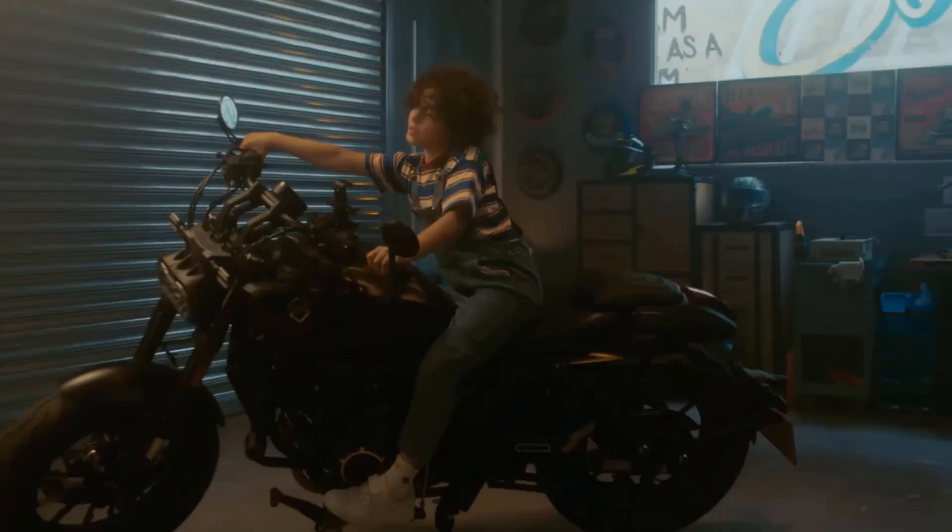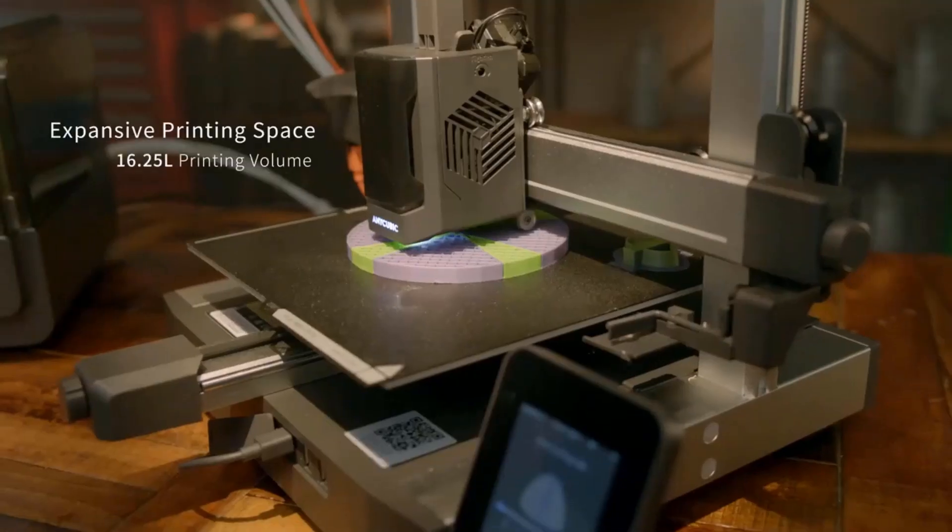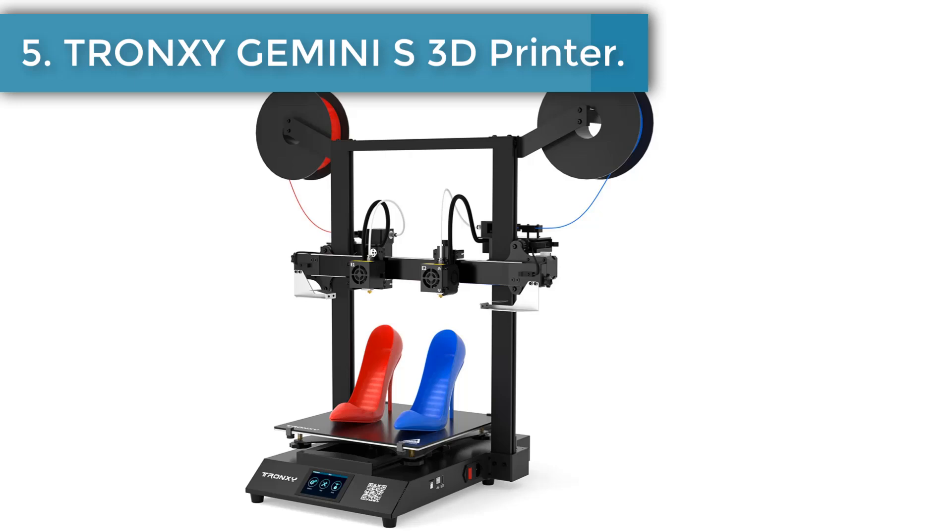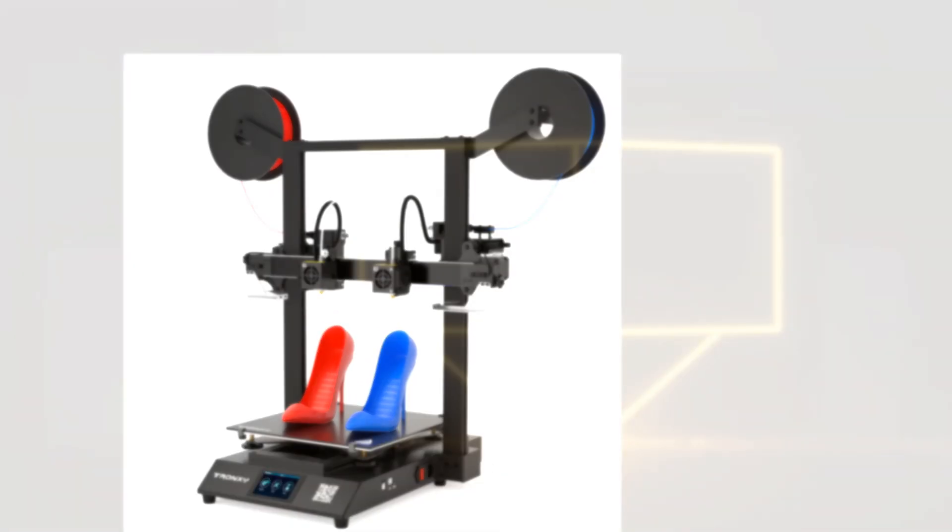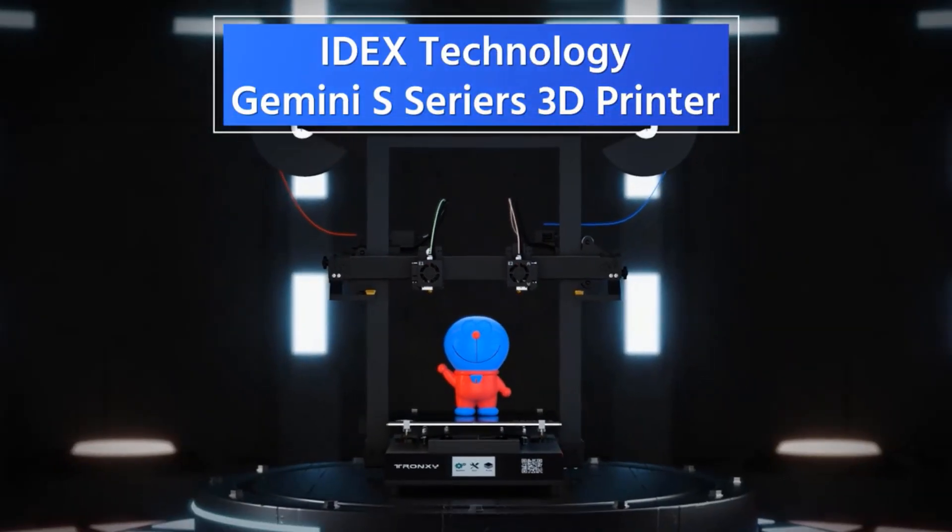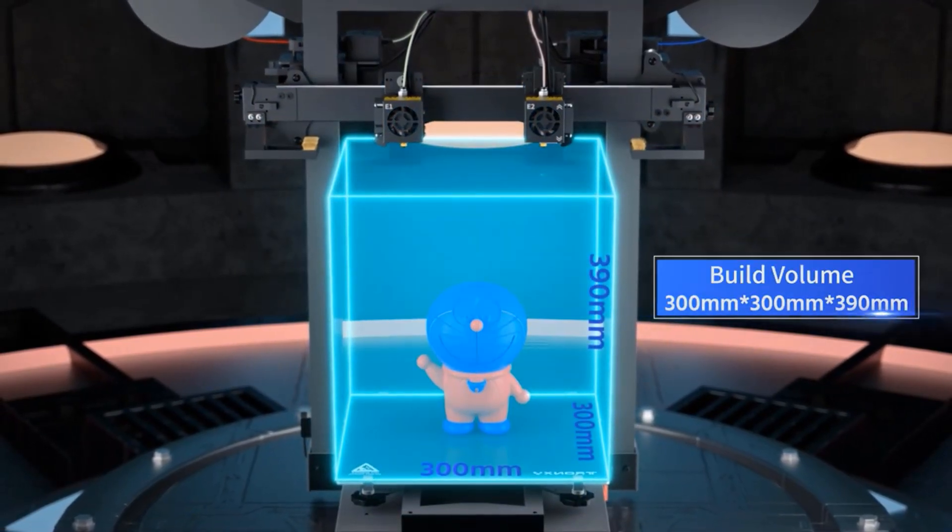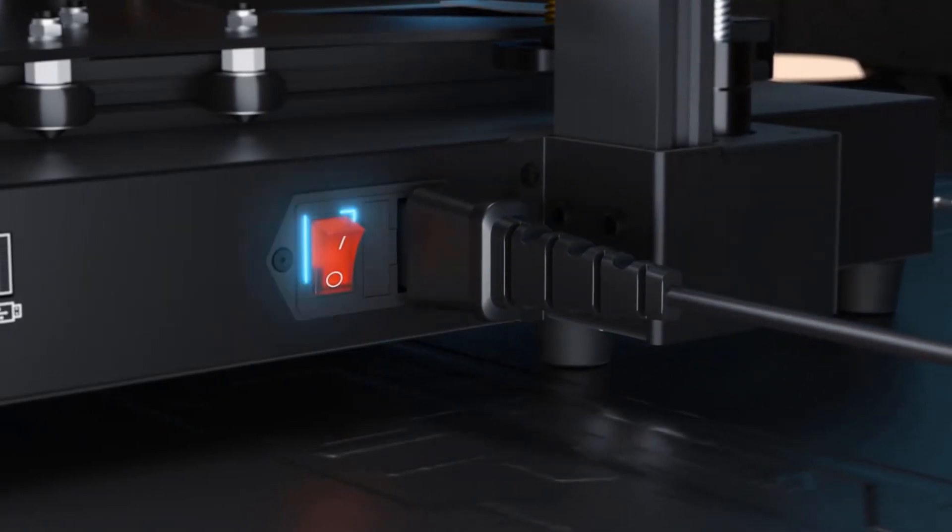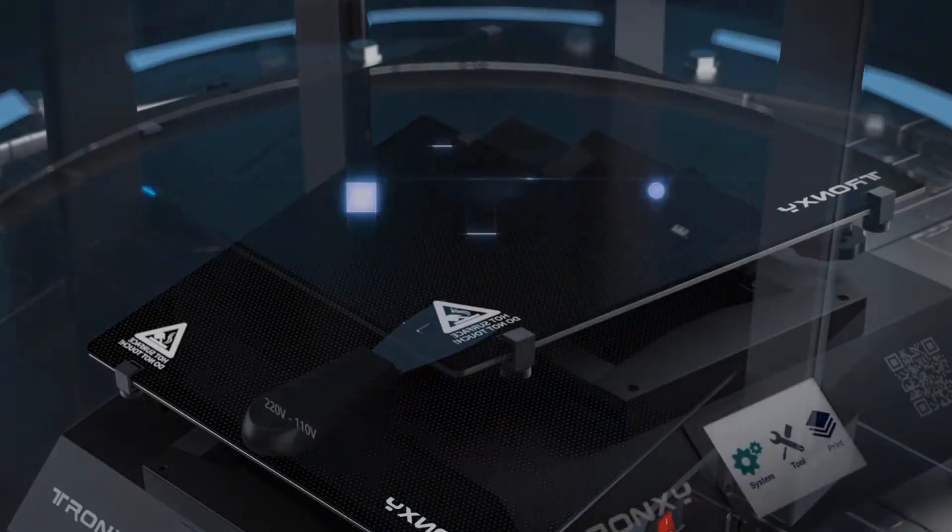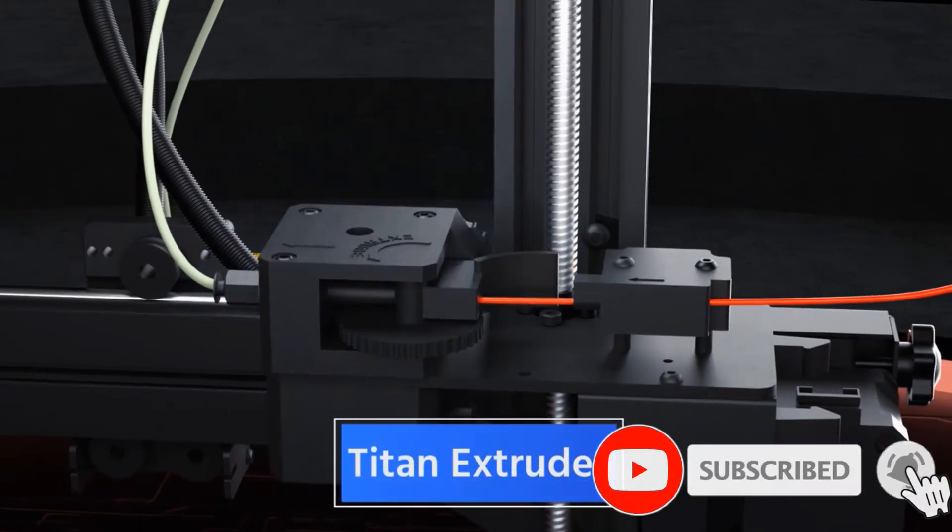Number five: Tronxy Gemini S 3D printer. Integrated structure assembled in two steps. The whole machine is composed of two parts—the upper frame and bottom base—which saves the cumbersome assembly process. High-performance silent motherboard: the ultra-quiet motherboard is equipped with an ARM high-performance processing chip and a TMC ultra-quiet driver, which makes printing processes quieter, more accurate, and more stable. Intelligent memory power failure resume printing: intelligent printing automatically remembers the printing progress and restarts the machine to resume printing at breakpoint after power off.